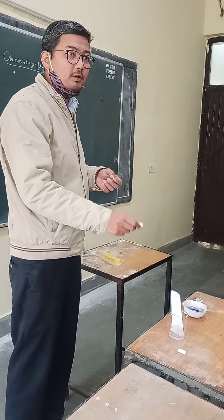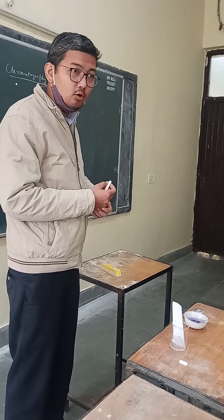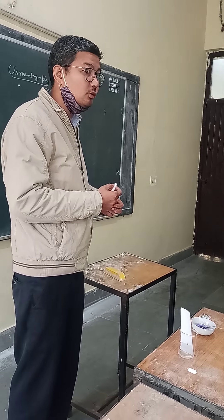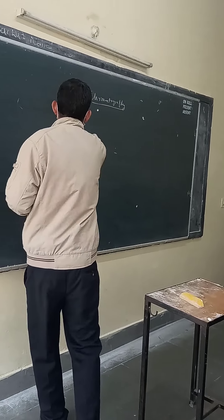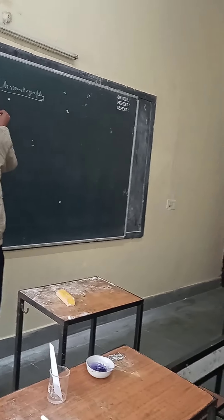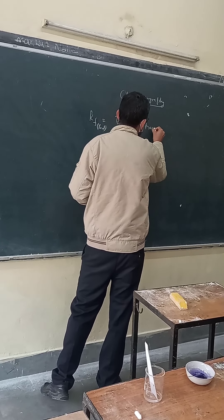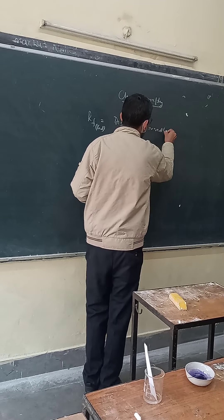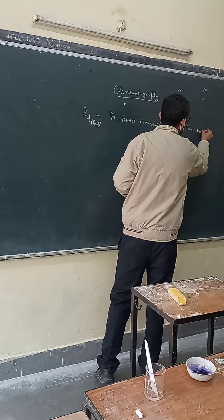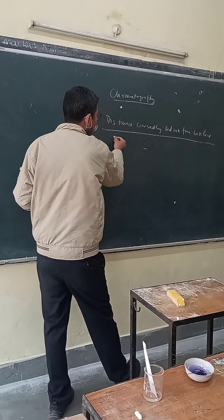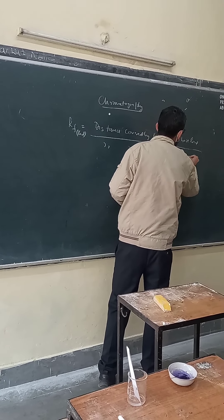This is paper chromatography. Similarly, there is gas chromatography and thin layer chromatography — there are different types. You have to calculate the RF value. RF is the distance covered by the compound (e.g., red ink) from the baseline, divided by the distance covered by the solvent from the baseline.